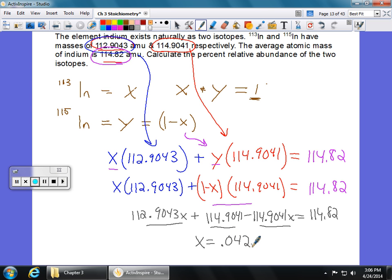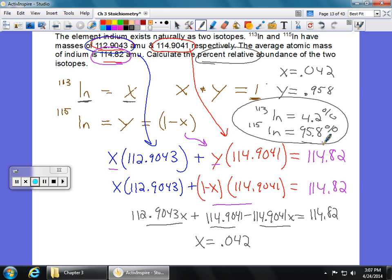Well, what does that mean? Let's come back up to the top here. That means the relative abundance of indium, which we called our x, is 0.042. x is 0.042. And it told us that 1 minus x was equal to y. y was our relative abundance of indium 115. So if we do 1 minus that, that's going to give us 0.958 for our relative abundance of indium 115. If we wanted to turn that into a percent, because the problem says what is the percent, we just multiply by 100. So indium 113 is going to be 4.2%. And our indium 115 is therefore going to be 95.8%. And we know that we did our job right because these two are going to add up to be 100%.